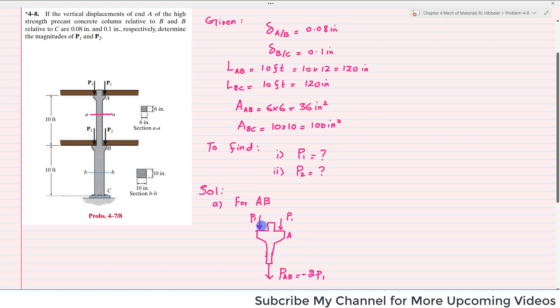At this point where we have cut, there we have load PAB, and this PAB is equal to minus 2P1. Why minus 2P1? Because P1 and P1 is 2P1, and this load is shown downward. While the reaction force in the remaining portion, this force will be acting upward.